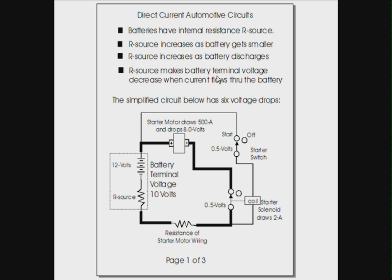R source makes battery terminal voltage decrease when current flows through the battery. Any current flowing through this battery in a counterclockwise direction will flow through R source and cause a voltage drop. This voltage drop will subtract from the battery voltage. Therefore, the voltage out is only 10 volts while the circuit is active — so R source drops 2 volts. The battery itself gets hot from its own internal R source resistance.